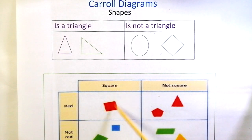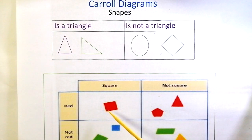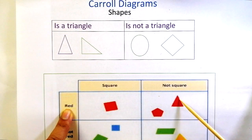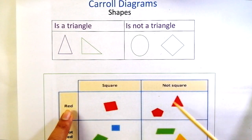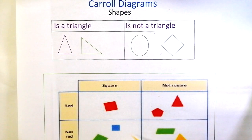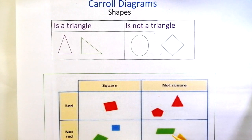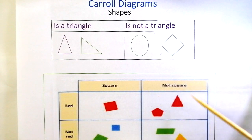In this column you can see that this shape is a square and it is red. These shapes are also red but they are not squares. In the next row, these shapes are not red but they are squares. And this last box says that these shapes are not red and they are not squares either.